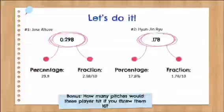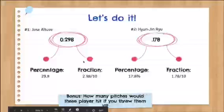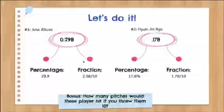And our bonus question is, how many pitches would these players hit if you threw them 10? So from Jose Altuve, we can see that if we round up, it's about 3 out of 10. So if you just threw him 10 pitches, he'd probably hit around 3 of them. For Hyunjin Ryu, we can round up to 2. So that's 2 out of 10. So if you threw him 10 balls, he'd probably hit around 2 of them.